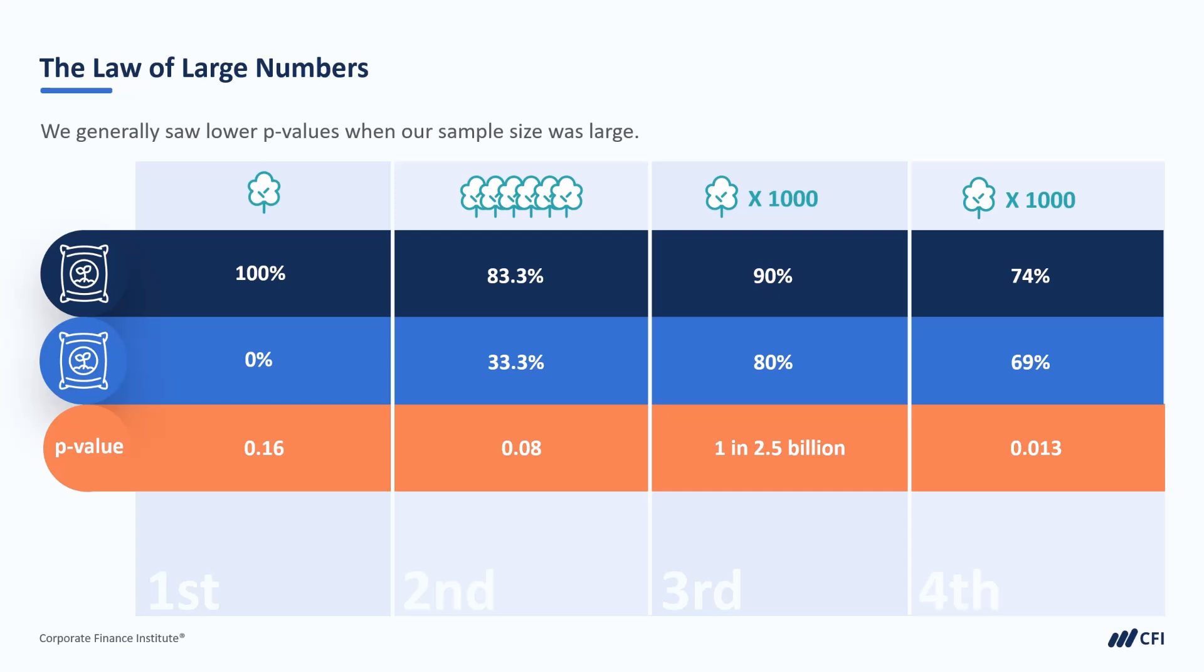It becomes more and more clear that the difference is not the result of randomness. In fact, when our sample hits 1000, we become extremely confident that our two samples are different. This reinforces the idea that larger samples are nearly always better than smaller samples.